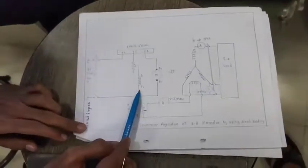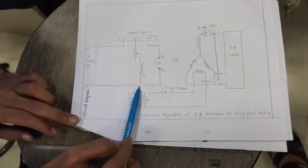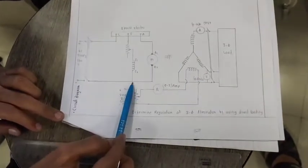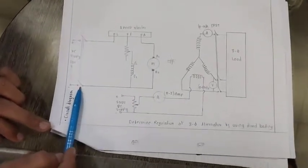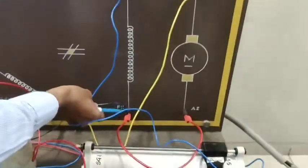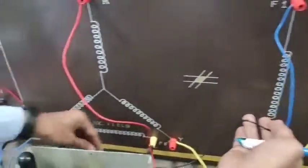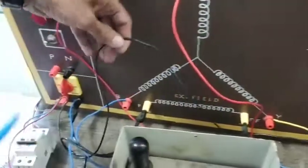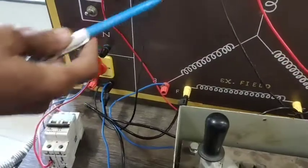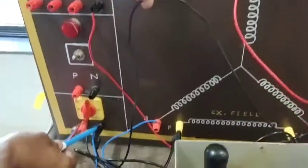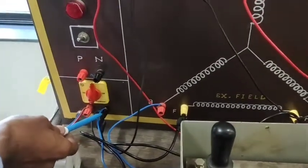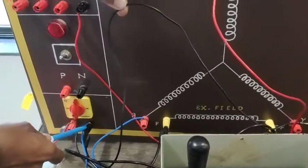We have completed the connections for the prime mover. The A2-F2 junction is connected back to the negative terminal. You can see here this connection from F2 goes back to the negative terminal — the black negative terminal.